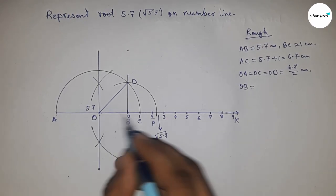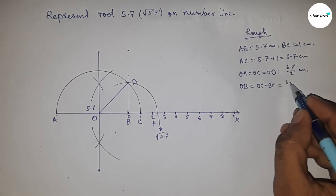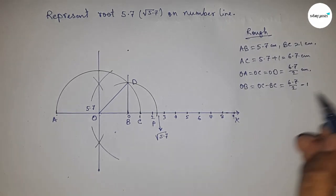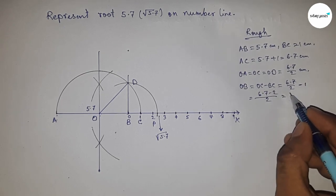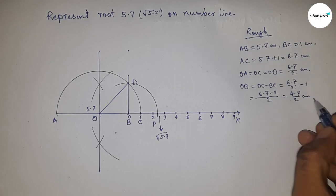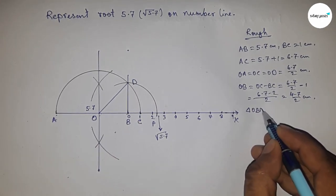The distance OB equals OC minus BC. Putting the values of OC and BC and after calculating, this is 4.7 by 2 centimeters. From right angle triangle OBD, we can write BD equals, by Pythagorean theorem, root of OD squared minus OB squared—hypotenuse squared minus base squared.